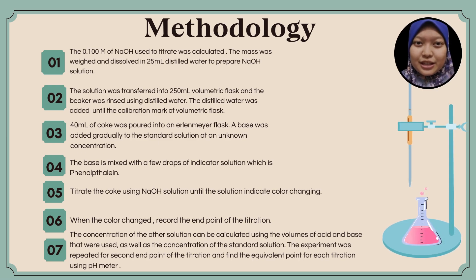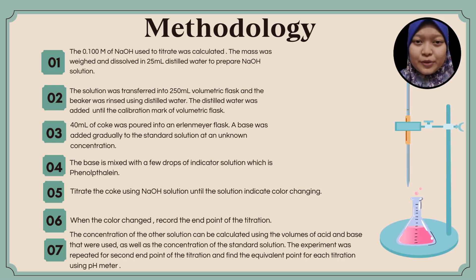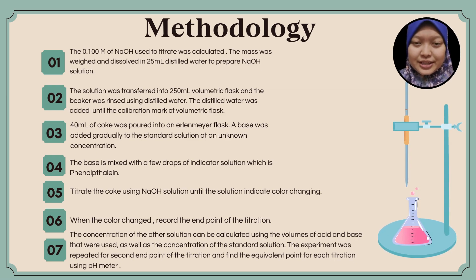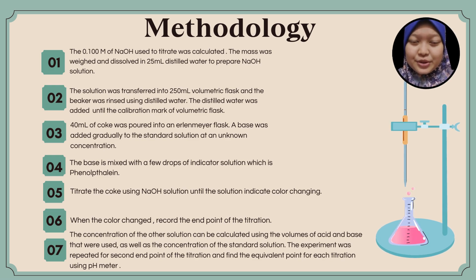The concentration of the solution was calculated using the volumes of acid and base that were used, as well as the concentration of the standard solution. The experiment was repeated for a second endpoint of the titration, and the equivalence point for each titration was found using a pH meter.